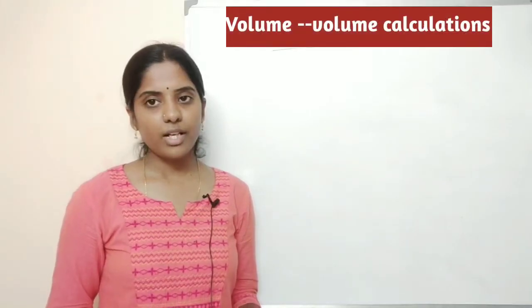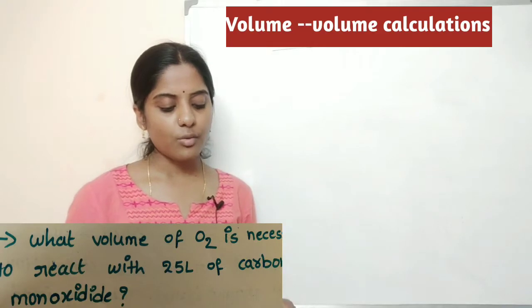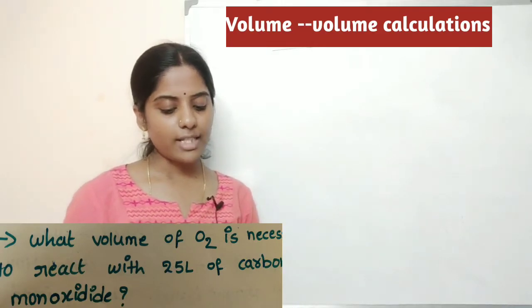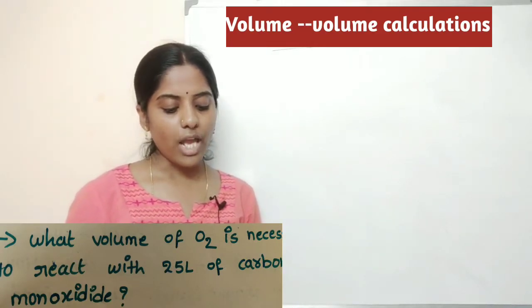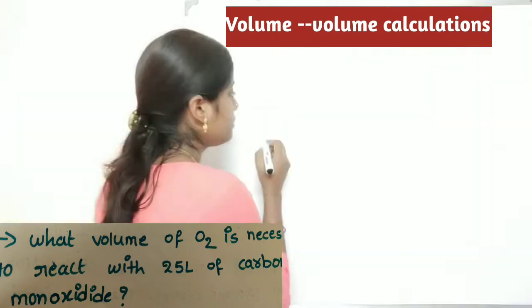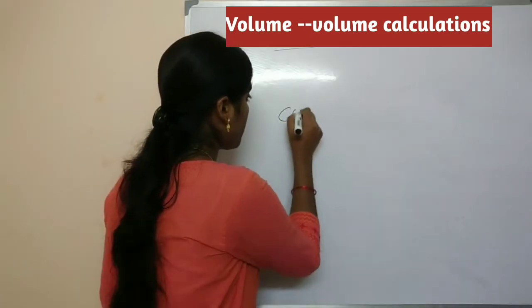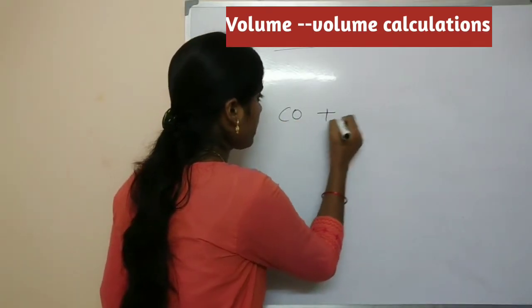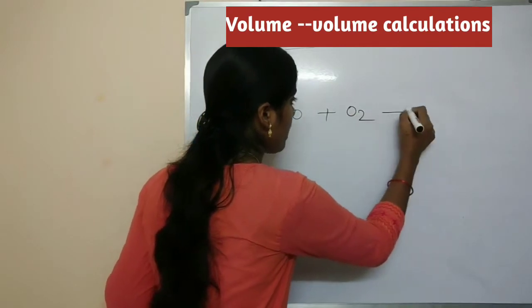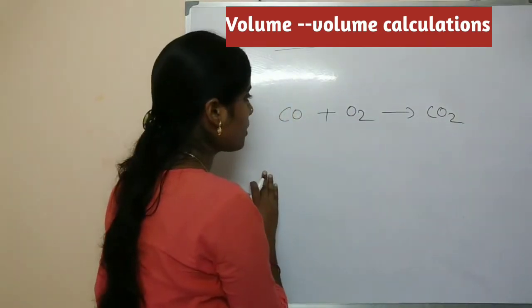In the volume-volume relationship calculations, the first question is: what volume of O₂ is necessary to react with 25 liters of carbon monoxide? Carbon monoxide reacted with oxygen can form carbon dioxide. Now we balance the equation.